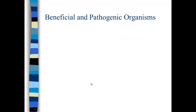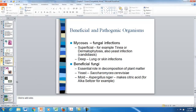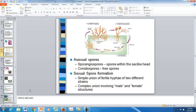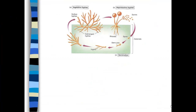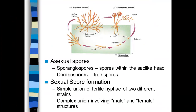There is also sexual spore formation. This is just a simple union of fertile hyphae from two different strains, and sometimes there is sort of a male and a female structure in some more advanced species of spores.